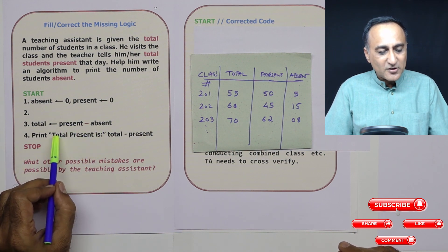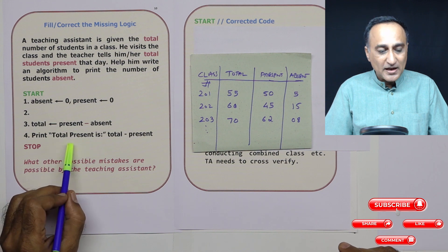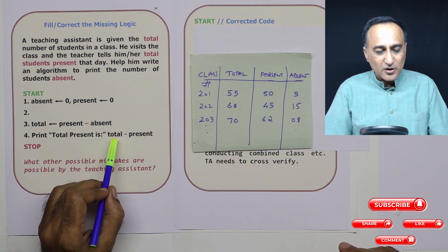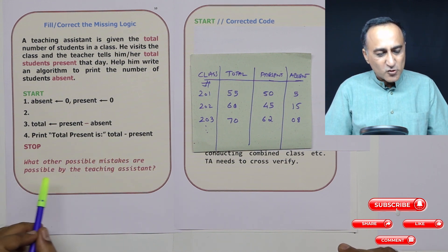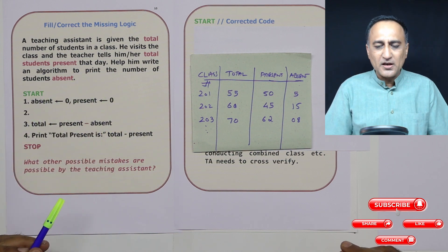And finally, it should not print total present, it should print how many are absent. Absent is total minus present. So there are a lot of problems in this particular logic.